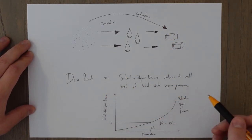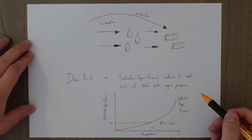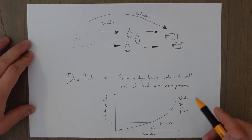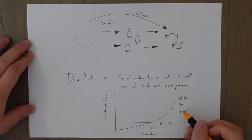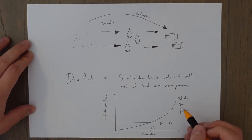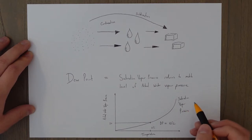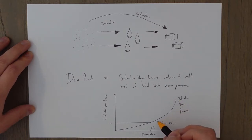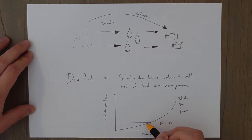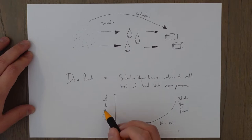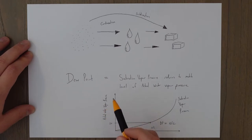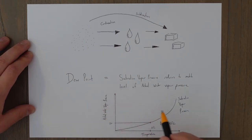The temperature at which condensation occurs is known as the dew point. This is the temperature where the saturation vapor pressure — the amount of water vapor the air can hold — reduces down to the point where it matches the actual amount of water in the air, known as the actual water vapor pressure.